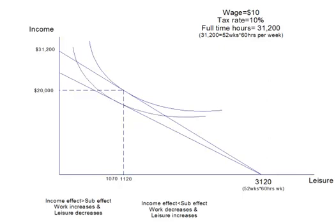So now let's draw our indifference curve. I made it so the income effect is greater than the substitution effect, because the new equilibrium is to the left of where we were originally — so less leisure, more work. We'll draw a dashed line straight through that equilibrium point. That gives us $10 times 2,050 hours of work, which equals $20,500 gross. Then $9 times 2,050 hours equals $18,450 net.